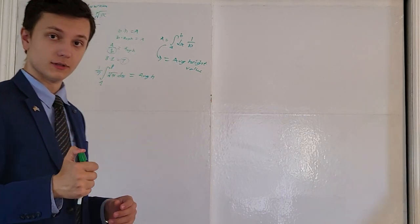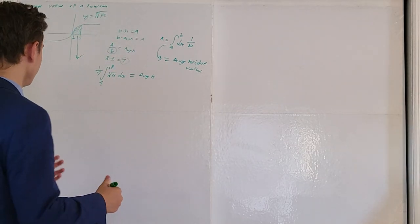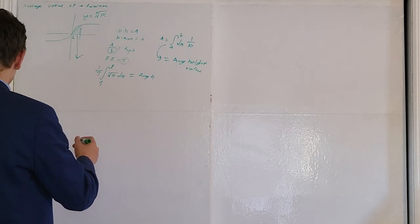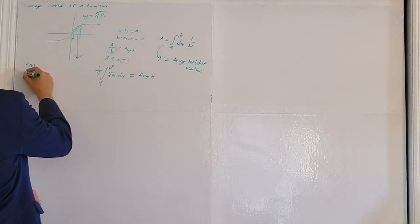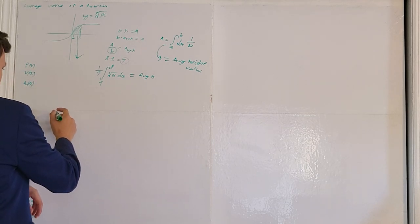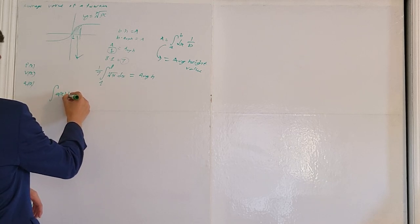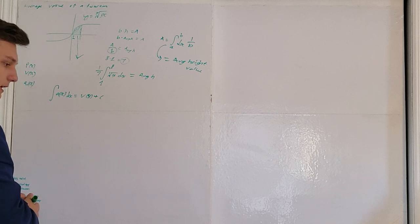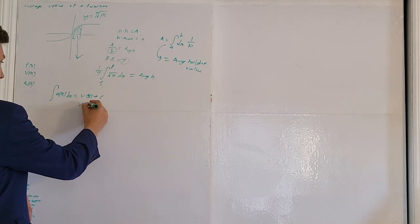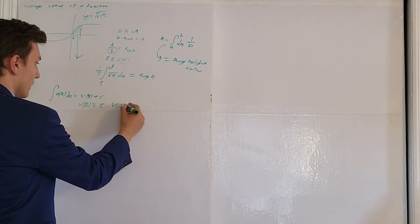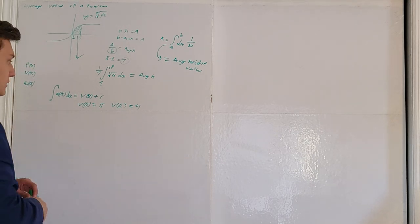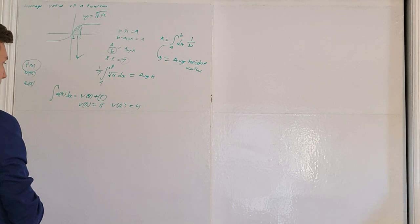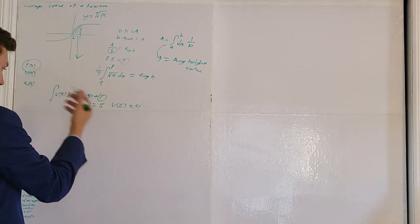A big part of this unit is learning how to apply integrals in context. We need to be able to relate position, velocity, and acceleration to one another. The anti-derivative of acceleration equals the velocity function plus some constant c. If you're asked to solve for the velocity function, they'd give you something like v(0) equals 5 or v(1) equals 4 to solve for c. The same holds true for the position function — that's the anti-derivative of velocity.